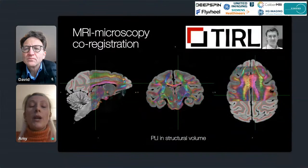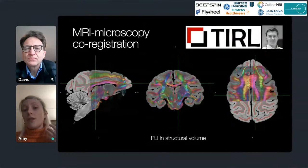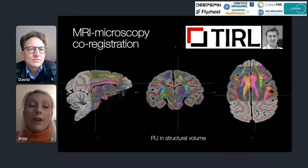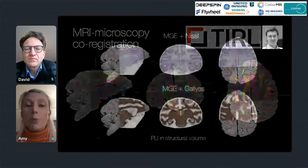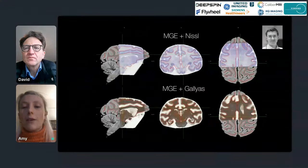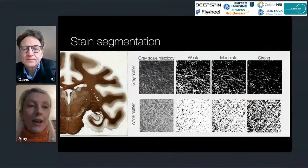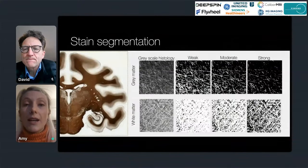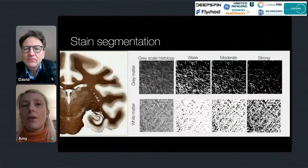We can co-register every single microscopy slice into the MRI volume. Showing the output for the anterior portion of polarized light images registered to the structural MRI, we get very good agreement of tissue boundaries — and this holds both for PLI and for similar registrations of the Nissl stain and the myelin stain.